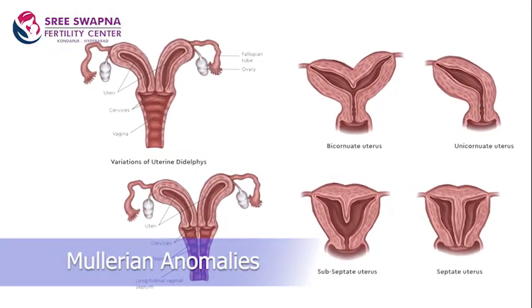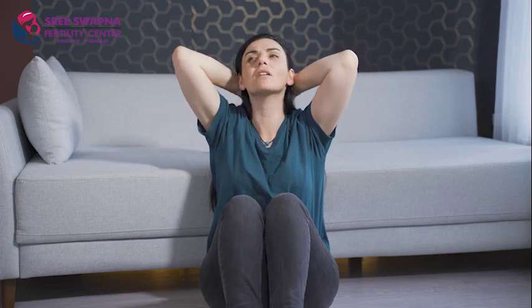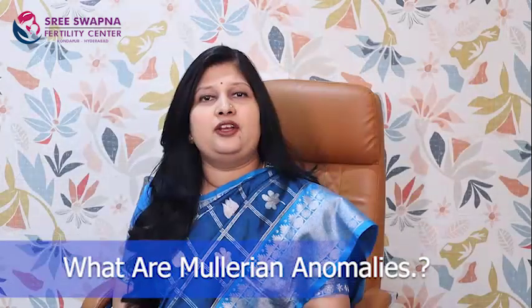Mullerian anomalies are one of the most common causes for couples who are not conceiving, and for repeated pregnancy losses either in the second or the third trimester. Nowadays we are diagnosing these types of cases a lot.